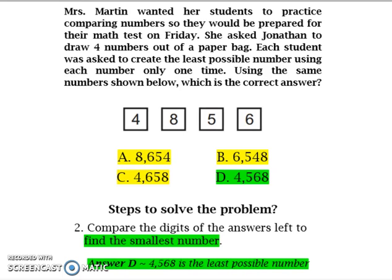And our answer choice will be D, 4,568 is the least possible number using the numbers pulled out of the paper.